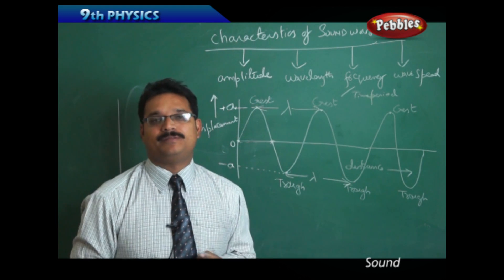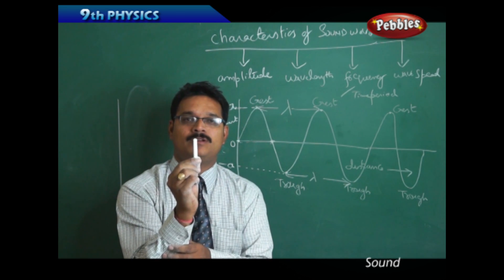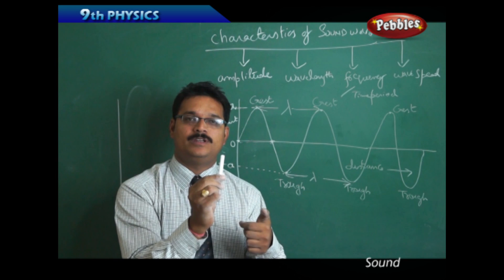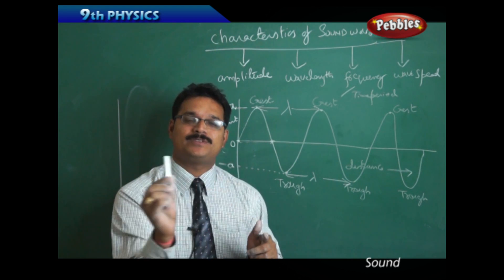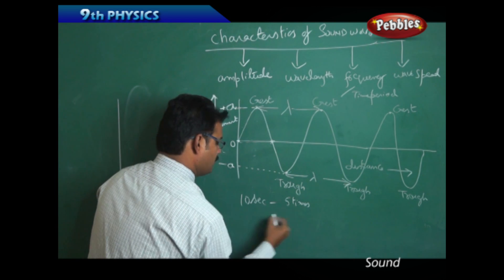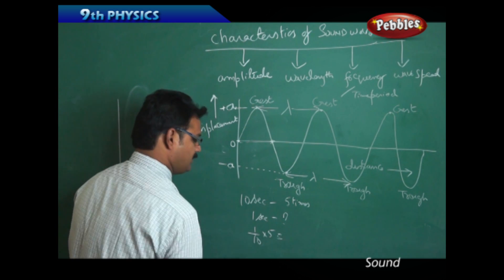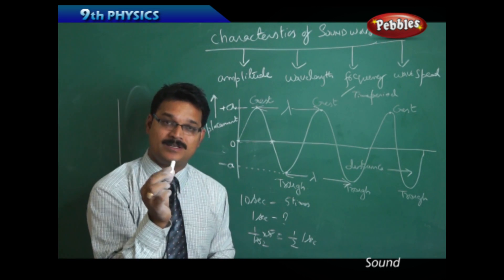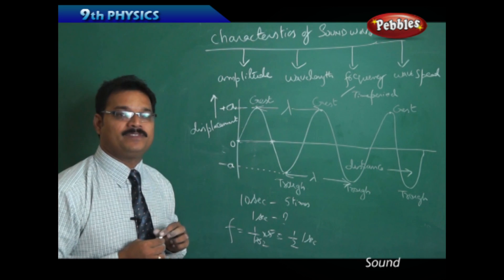Frequency means how many times a body or object is doing an action repeatedly in one second. Take this chalk piece — I am holding it and moving it: one, two, three, four, five. Within ten seconds I have moved this chalk piece five times. So in one second that is (1/10) × 5 = 5/10 = 1/2 per second. I have moved the chalk piece half a time in one second, and this is called my frequency.